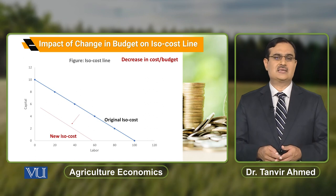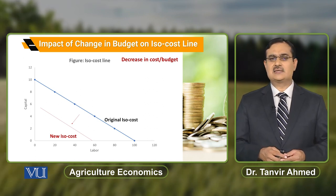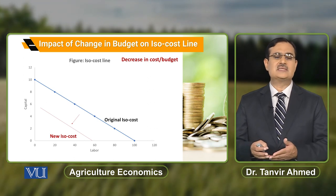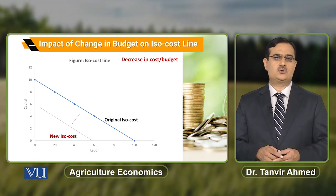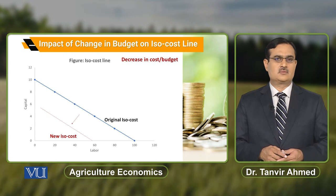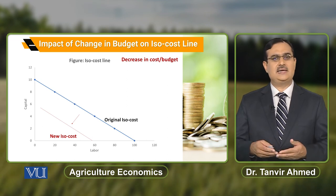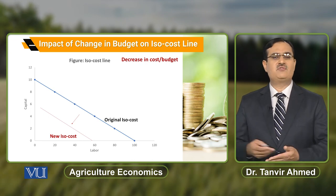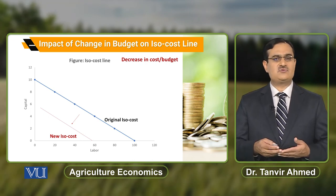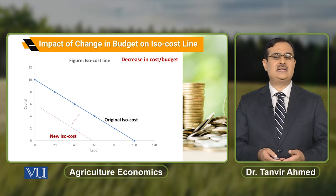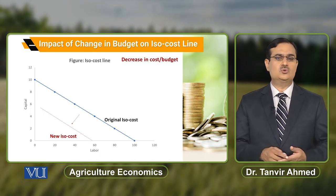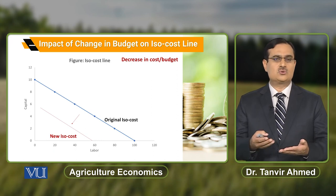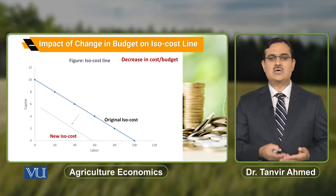Suppose the farmer decides that he should decrease the allocation of resources on the purchase of these two inputs۔ ہماری assumption یہ ہے کہ there is no change in the prices of inputs in the market — صرف farmer اپنی allocation change کر رہا ہے، اور وہ decrease کر رہا ہے in the allocation of resources for the purchase of these two inputs۔ تو اس case میں ISO cost line will shift downward۔